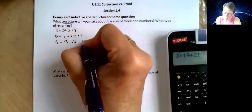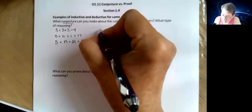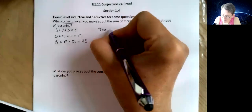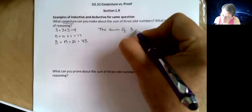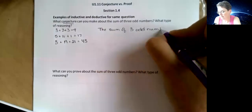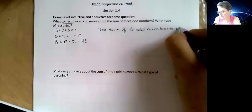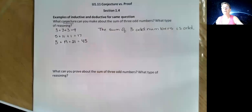Okay, what conjecture can I make? The sum of three odd numbers is odd. That's it, done. That's all your question.